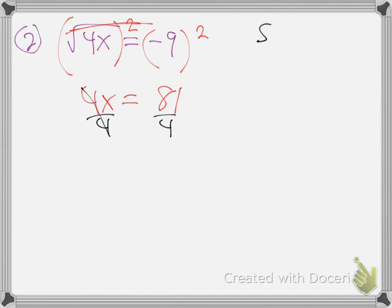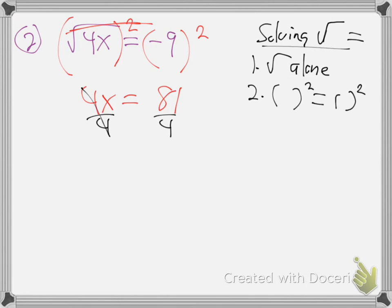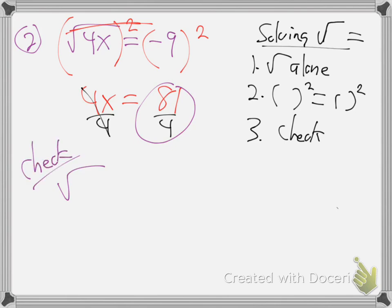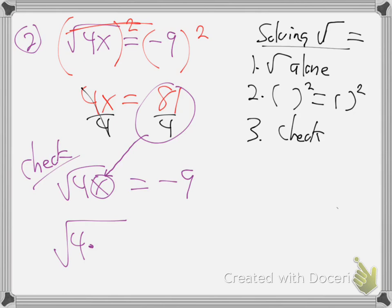Now what were the steps for solving a square root equation? Step one: get the root alone. Step two: two-power both sides. I'm adding Step three now: check. You really have to check — not just because you might have made a mistake, but because the method itself can give you false answers. So how do you check? You take your answer and plug it into the original equation. Put in 81 fourths for x — turns out this problem has no solution; that's a false answer.